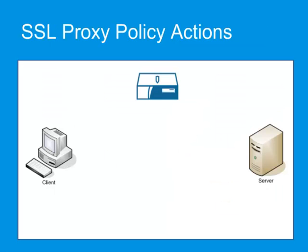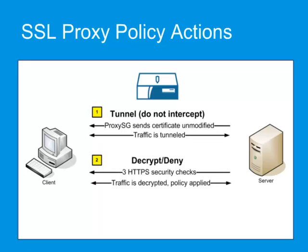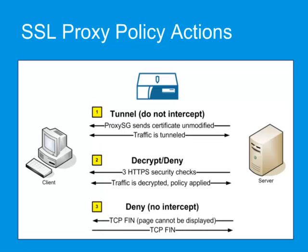There are three methods of handling SSL traffic coming through the ProxySG. First, Tunnel — do not intercept. In explicit mode, you are blind to what's going on with the traffic and there is no certificate validation. In transparent mode, the certificate may be validated because the SSL proxy becomes invoked. Second, Decrypt and Deny — certificate validation takes place and policy can be applied. Third, Deny with no interception — the traffic is blocked with no SSL interception.